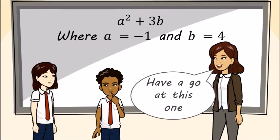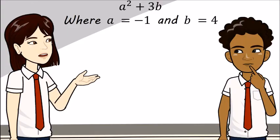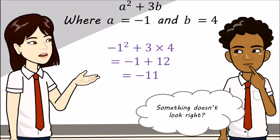a squared plus 3b where a is minus 1 and b equals 4. When we substitute a as minus 1 and b as 4 we get minus 1 squared plus 3 times 4. Since 1 squared is 1 we get minus 1 plus 12 which is minus 11. Something doesn't look right.